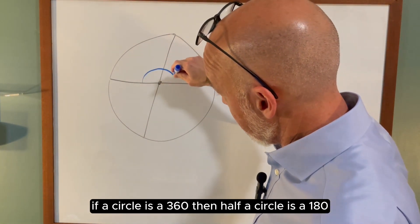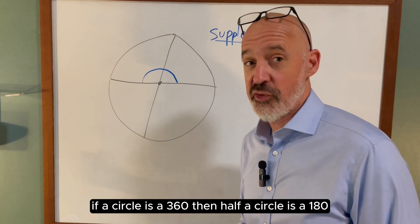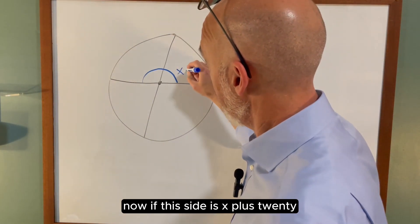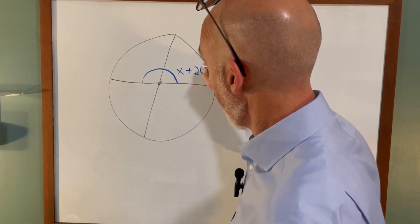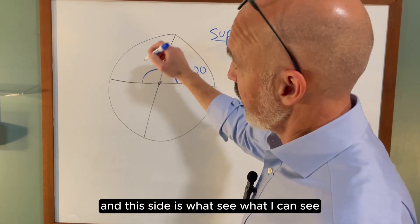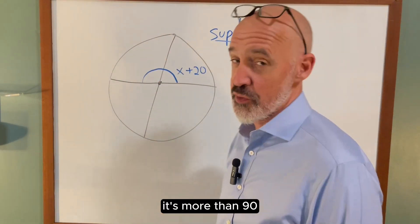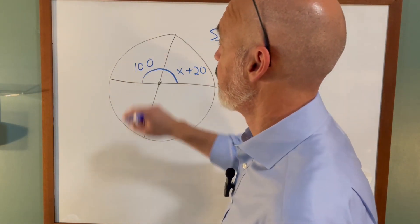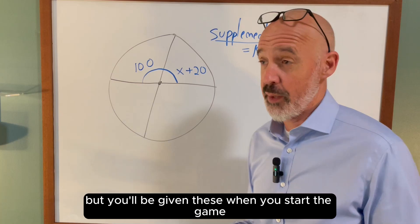If a circle is 360, then half a circle is 180. Now if this side is x plus 20 and this side is, well I can see it's more than 90, so I'm just going to put it at 100 degrees. But you'll be given these when you start the game.